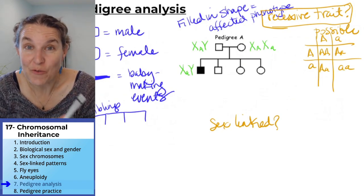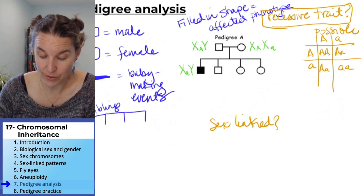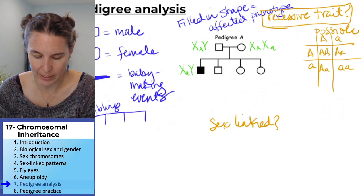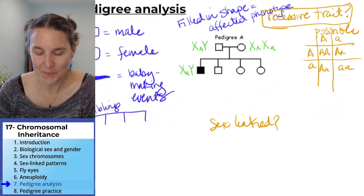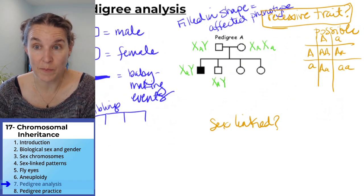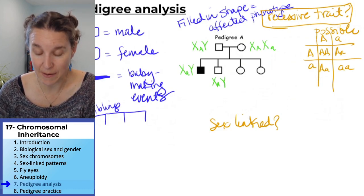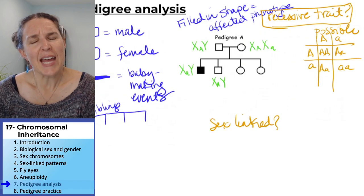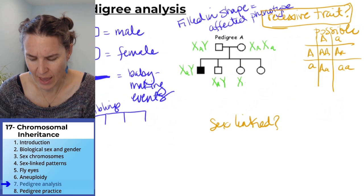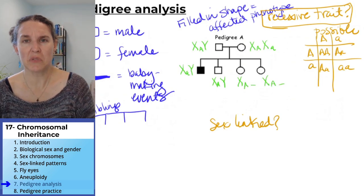Girls get an X from their dad. Dads only give Xs to their girls. And I say that anatomically, not genderly. We know this person has to have a Y chromosome, but doesn't express the condition. So they have to be X, big A.